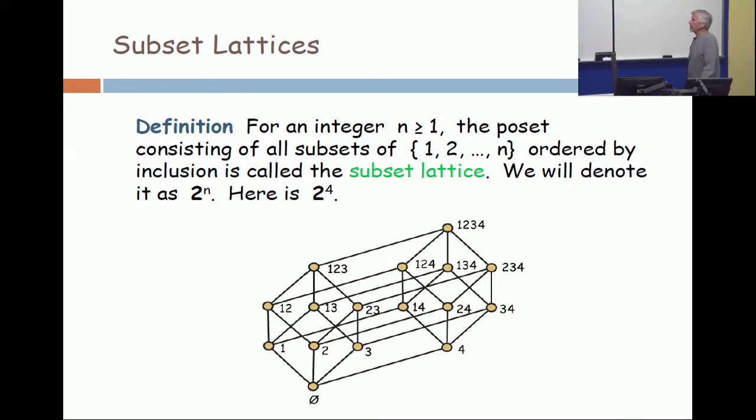So here is the poset formed by all the subsets of 1, 2, 3, 4 ordered by inclusion. Now, following my philosophy of being selectively lazy, you'll notice that I have omitted the squiggles and the commas. Now I can get away with this for a modest size set, but when the set is big, then I can't tell the difference between 24 and 2, 4.